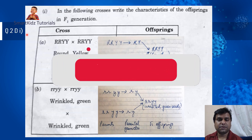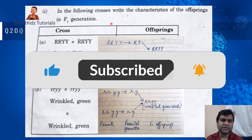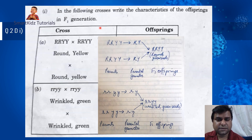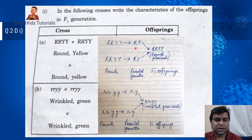Question 2D1: write the characteristics of offspring in the F1 generation given a crossover. If both parents are homozygous dominant (round and yellow seeds, RR YY crossed with RR YY), the gametes are both capital R, capital Y, giving F1 offspring that are RRYY — homozygous dominant, round and yellow seeds. In the second case with homozygous recessive (wrinkled and green), the F1 offspring will be wrinkled and green seeds.